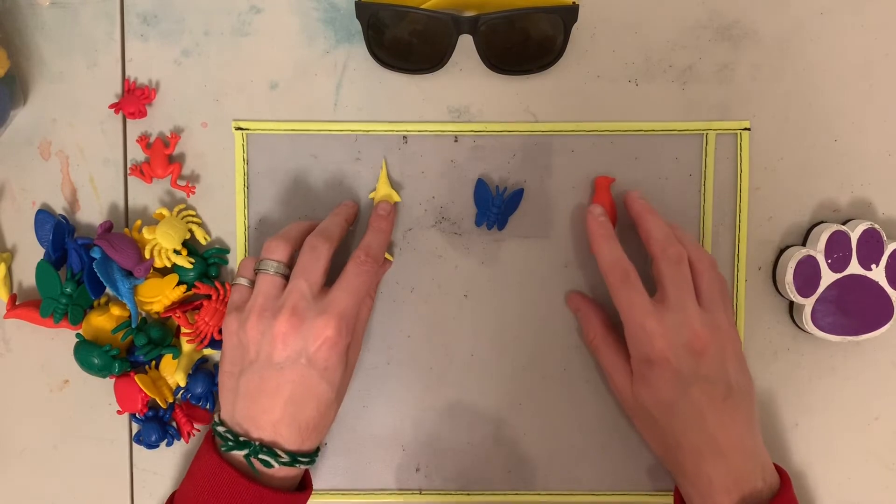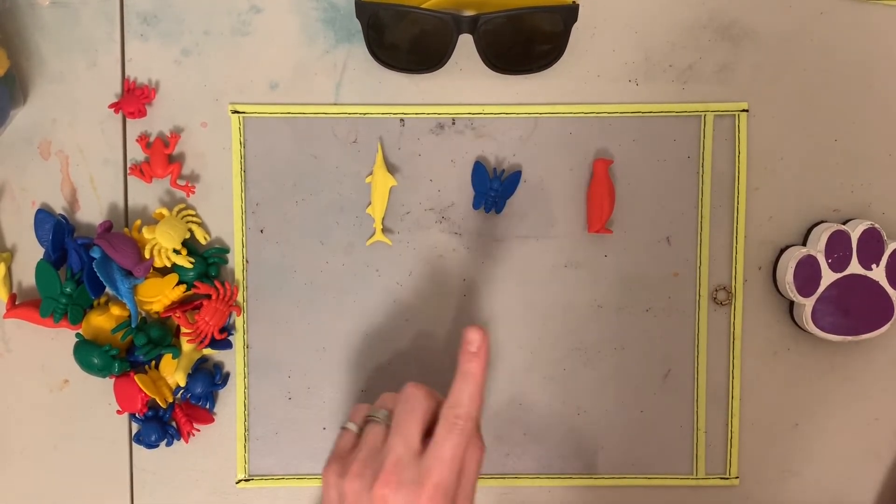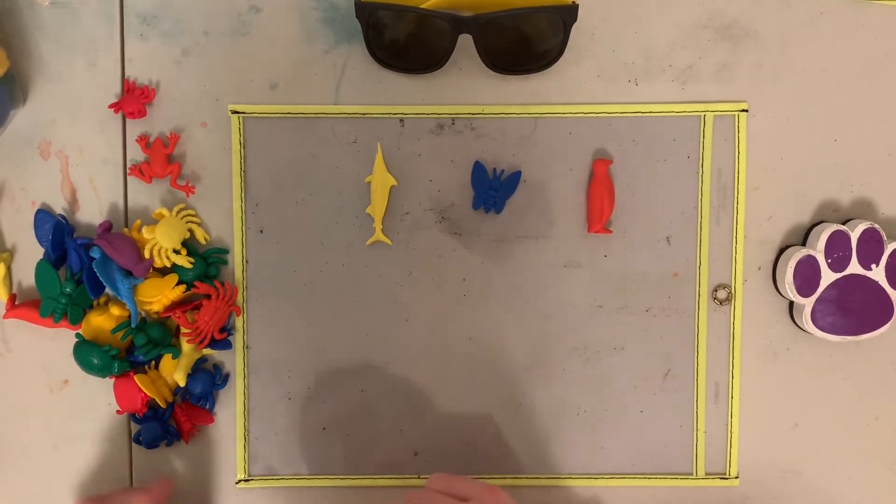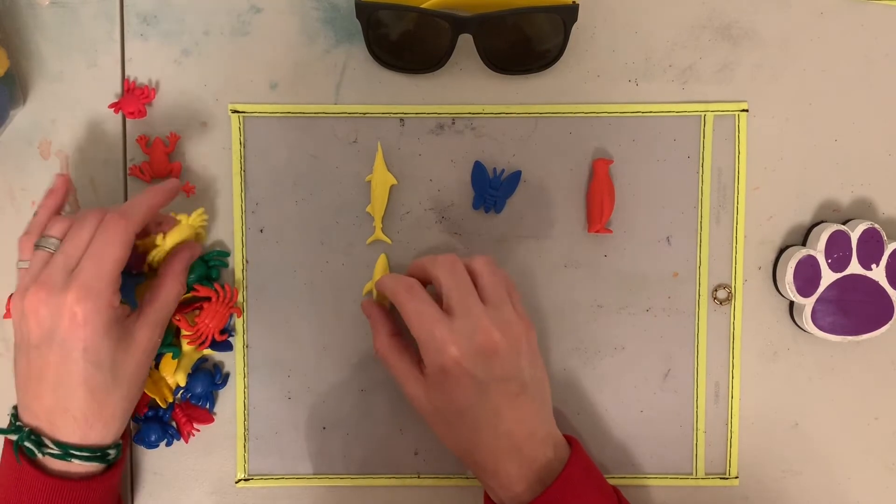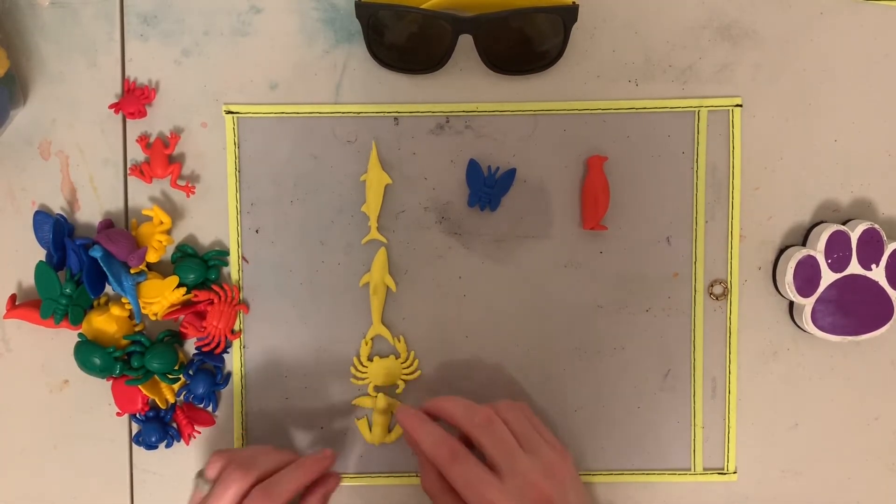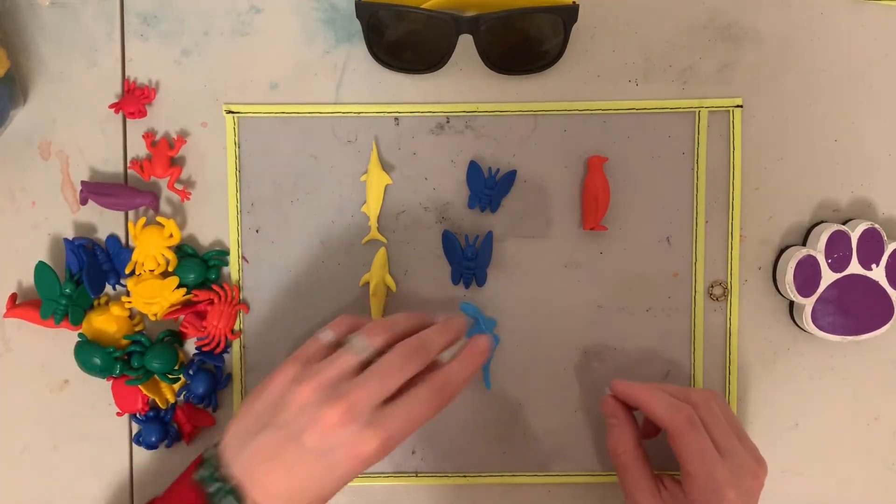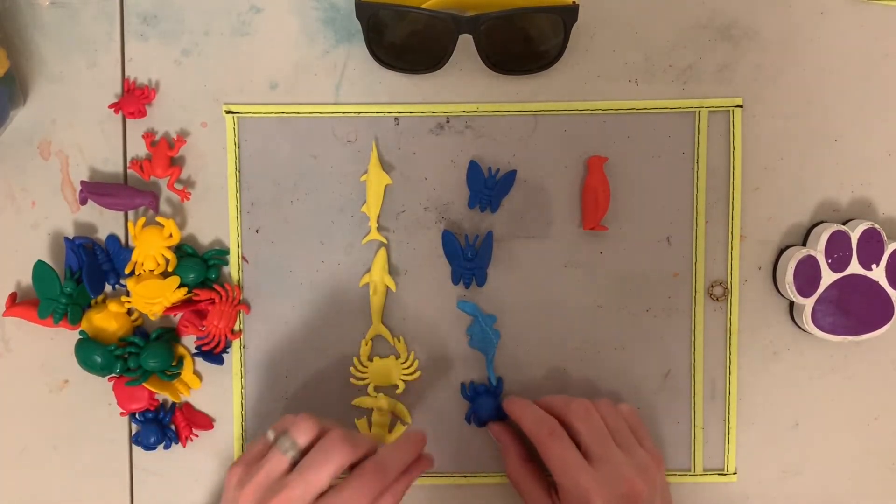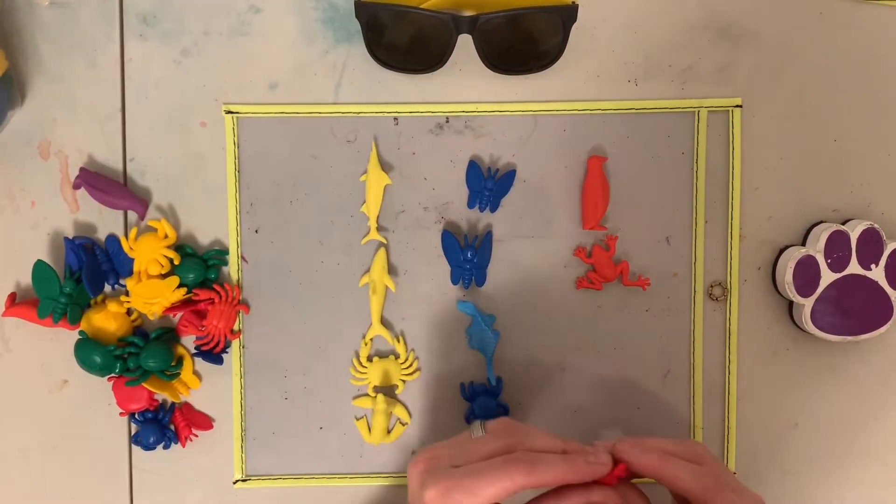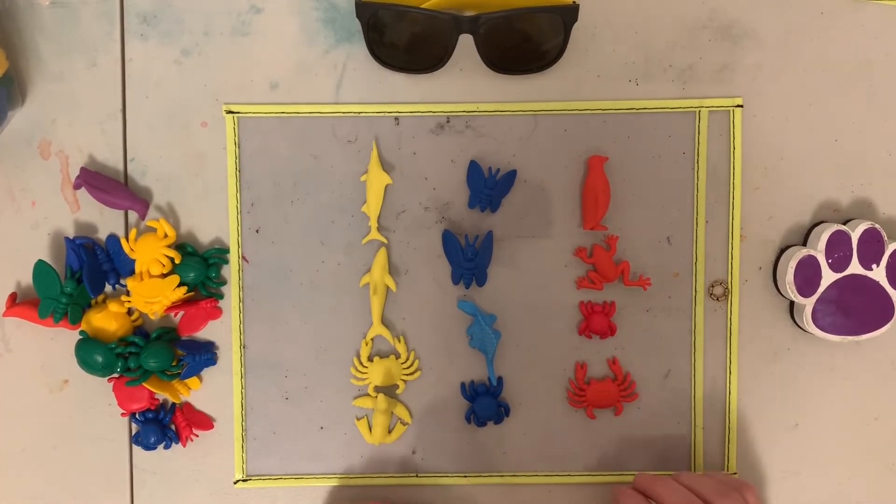Las tres filas van a comenzar aquí. And en cada fila, hay cuatro cupcakes. On each row, there's four cupcakes. So, I have one, two, three, four cupcakes. I have one, two, three, four cupcakes. And I have one, two, three, and four cupcakes.